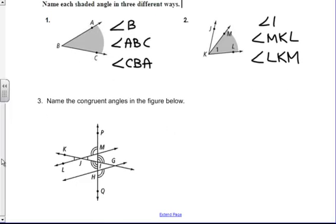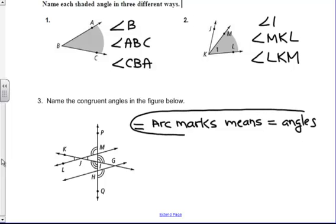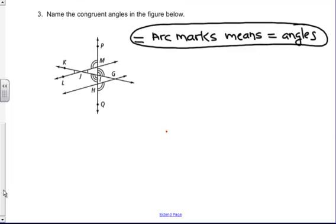Congruent angles, don't forget, equal arc marks means equal angles. If you see equal marks, you know they have to be equal angles. So knowing that, these angles here have to be equal because those are the same arc marks. So I know that angle KJL has to be congruent to angle MJG, because they have one arc mark.